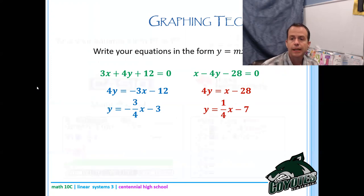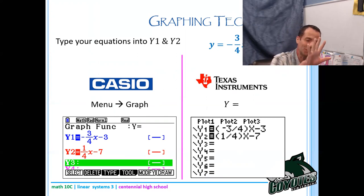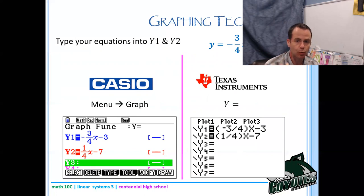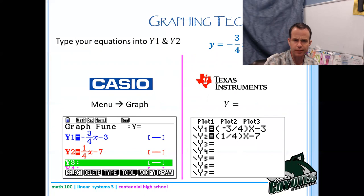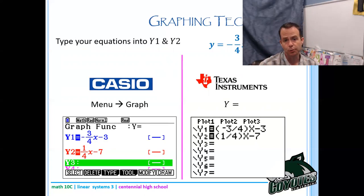Take a look at your calculator — is it Casio or TI? If it's Casio, you're following along on the left side of my slide. To get into the graphing feature, go to Menu then Graph: option 3 for white Casio, option 5 for black or gray Casio. You should then see a screen with Y1, Y2, Y3. On a TI, press the Y= button in the top left corner of your calculator to get Y1, Y2, Y3.